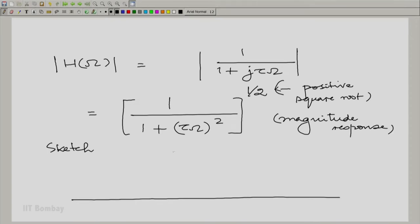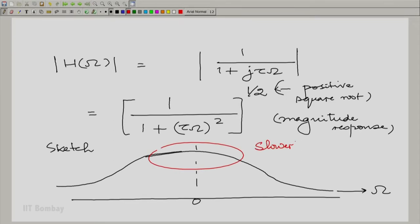Indeed, this magnitude response varies somewhat slowly around zero frequency. And we can show that by looking at the derivative of the magnitude response. What we are saying essentially here is that there is a slower variation around zero, and there is a faster variation as omega increases. And then of course asymptotically again it goes towards zero.